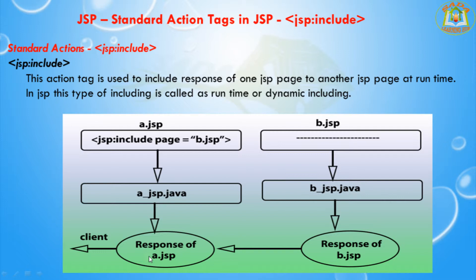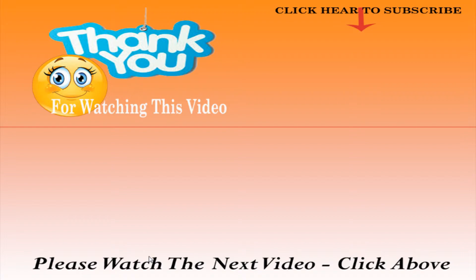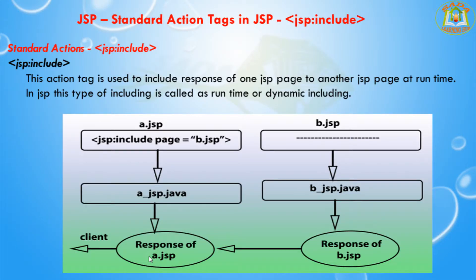This action tag internally uses the RequestDispatcher class. The RequestDispatcher class contains an include method, and internally the JSP colon include standard action tag uses this include method. Now I am going to explain some differences between the directive include and the action include.